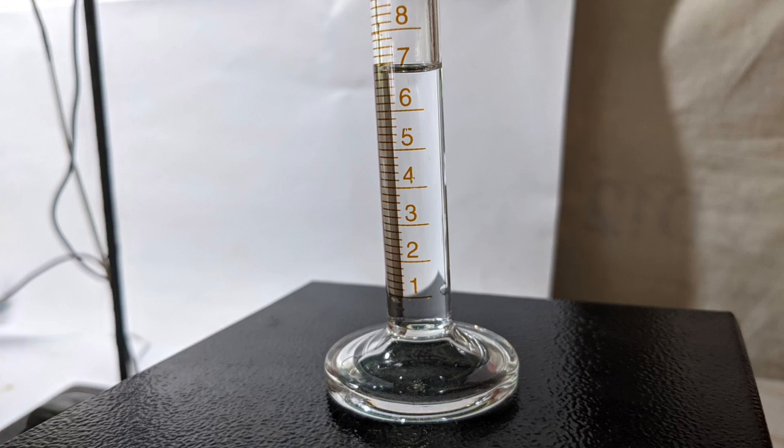The final yield of pure cyclohexanone that I obtained was 6.6 grams, that is 7 milliliters, which is very close to the yield of 8.3 grams mentioned in the literature.